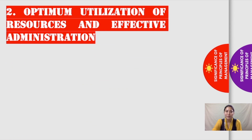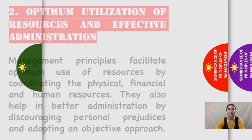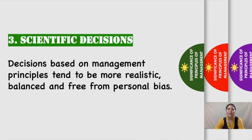Our second point is optimum utilization of resources and effective administration. Resources like men, material, machines, and money should be utilized in a manner that gives maximum benefit with minimum cost. Management principles are based on cause and effect relationships, which help managers predict the effect of a particular decision or action. Since resources are scarce and limited, management principles help in their optimal usage.